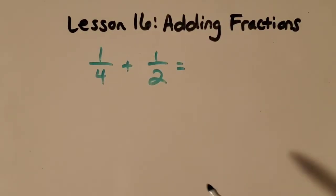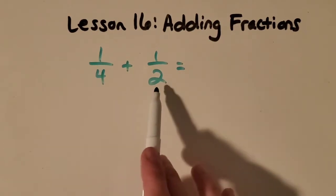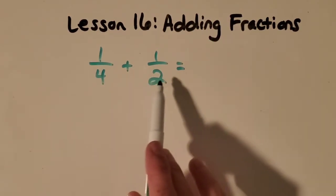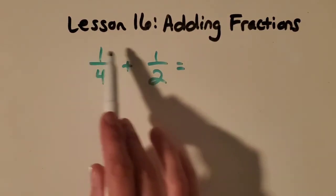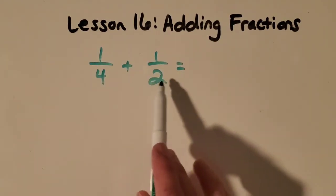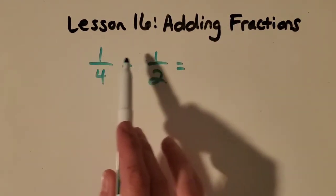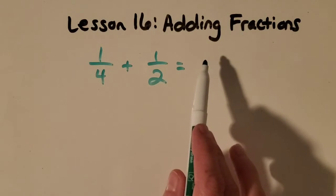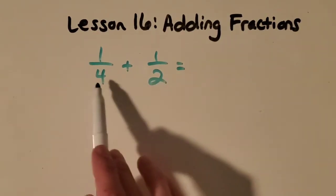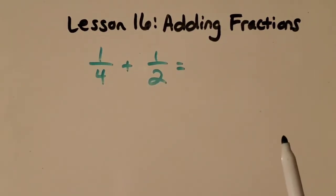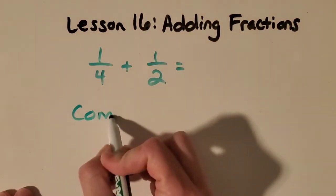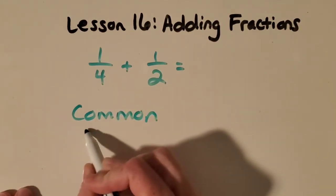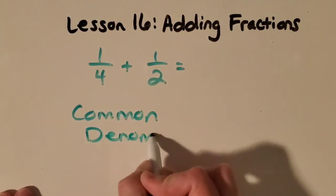Now we're going to take a look when the denominators are different, so fourths and halves. As is, we really can't work with this because if we did one plus one is two, but then we would be confused about what denominator to use. So we've got to do something called find a common denominator.